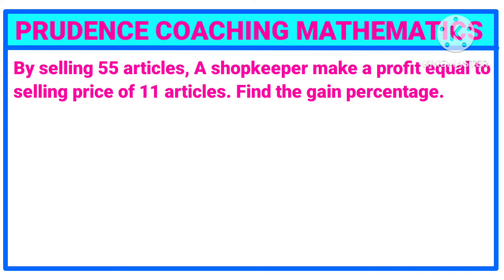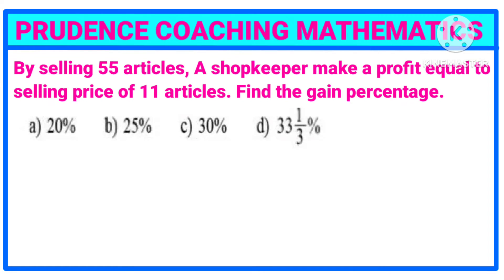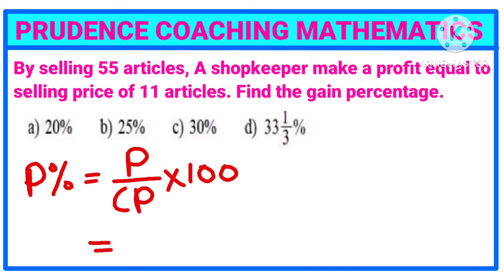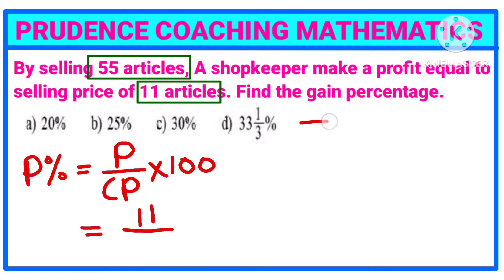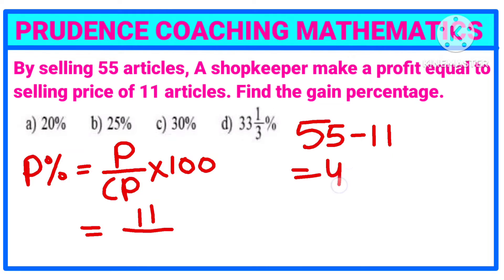Find the gain percentage. Gain percentage means profit percent, which equals profit divided by CP multiplied by 100. So profit is 11 articles. For CP, we take 55 articles as our SP minus 11 articles (our profit), giving us 55 minus 11, which equals 44. So it is 11 divided by 44, multiplied by 100.